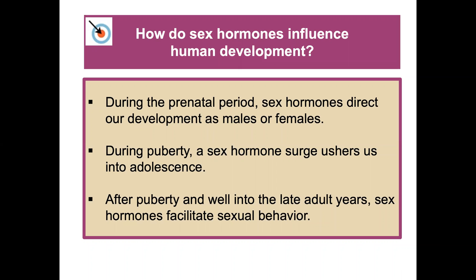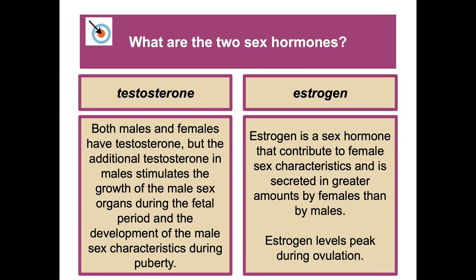During puberty, a sex hormone surge ushers us into adolescence. After puberty and well into the late adult years, sex hormones facilitate sexual behavior. The two main sex hormones are testosterone — both males and females have it, but additional testosterone in males stimulates growth of male sex organs — and estrogen, which contributes to female sex characteristics, is secreted more by females, and peaks during ovulation.